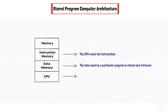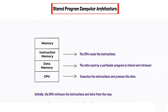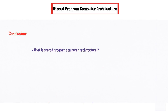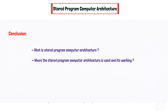The CPU executes the instructions and processes the data. Initially, the CPU retrieves the instructions and data from the respective memory units, then executes the instructions and stores the result back in the data memory unit if necessary. In conclusion, we saw what is stored program computer architecture, where it is used, and its working.